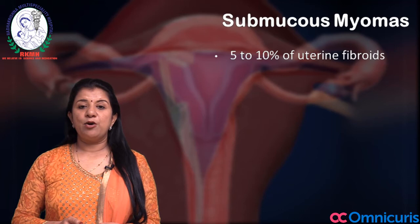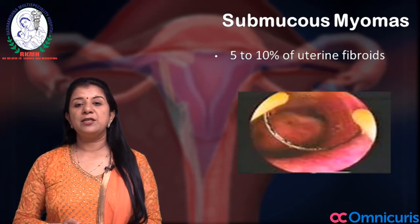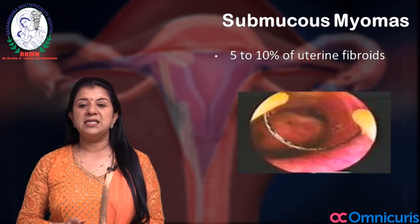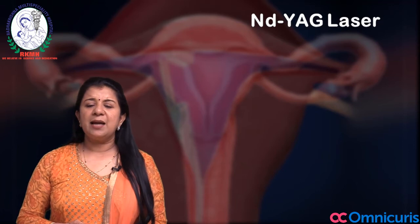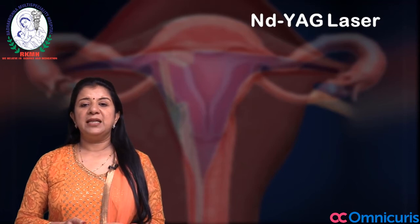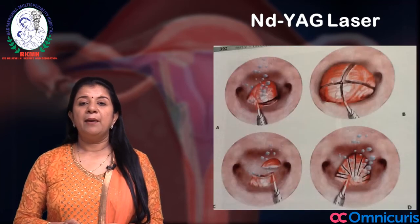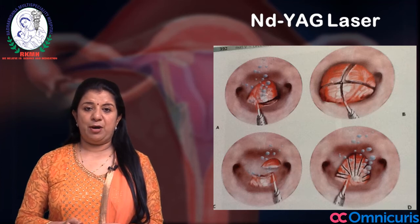Submucous myomas contribute to 5 to 10 percent of uterine fibroids. These can be removed with laser by cutting, but the routine practice is hysteroscopic myomectomy.